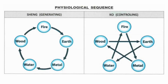The five elements are related to one another in two basic systemic and regulatory ways: generation and restraint. Generation and restraint are together a fundamental principle used by the theory of the five elements to encompass and explain the relationships between things and their development and changes.